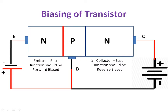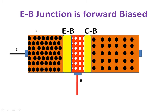During biasing, the emitter layer is highly doped, the collector region is moderately doped, and the base region is lightly doped. So the emitter has more electrons, the collector has a moderate number of electrons, and the base has fewer holes. The yellow color line represents the depletion layer or insulating layer at the emitter-base and collector-base junctions.